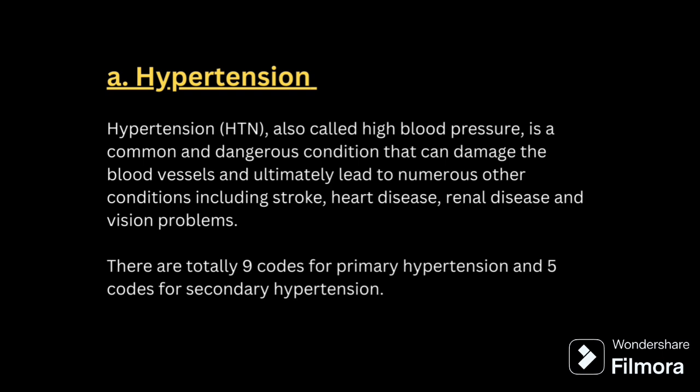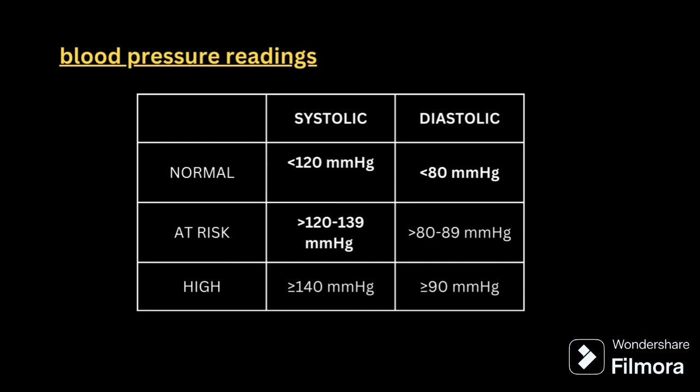We have a total of 9 codes for primary hypertension and 5 codes for secondary hypertension. Blood pressure reading: normal is 120/80. At-risk is considered 120-139 systolic and 80-89 diastolic. High blood pressure is when systolic is more than 140 and diastolic is more than 90.